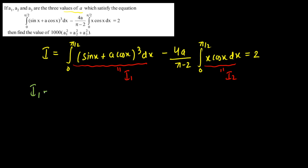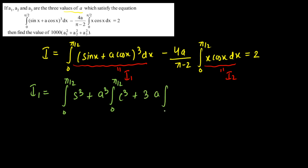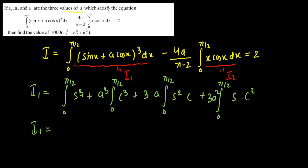Let's start with I1. Expanding (sin x + a·cos x)³ from 0 to π/2, we get: the integral of sin³x, plus a³ times the integral of cos³x, plus 3a times the integral of sin²x·cos x, plus 3a² times the integral of sin x·cos²x.